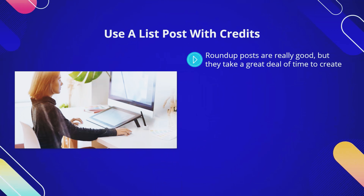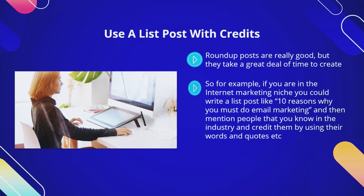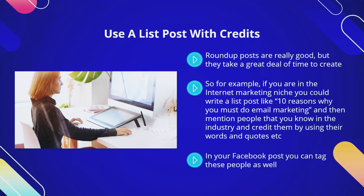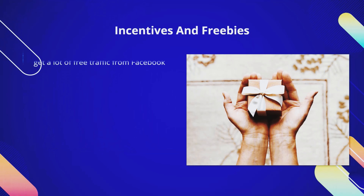Use a list post with credits. Roundup posts are really good but they take a great deal of time to create. As an alternative, you can create a list post which mentions and provides credit to others without them having to do anything. For example, if you were in the internet marketing niche you could write: '10 reasons why you must do email marketing' and then mention people that you know in the industry and credit them using their words and quotes. In your Facebook post you can tag these people and also contact them directly using Facebook Messenger.